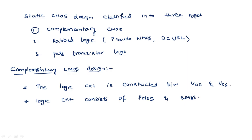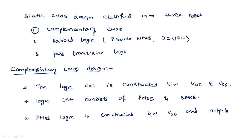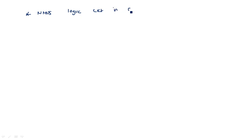The logic circuit consists of PMOS logic and NMOS logic, meaning the same function has to be implemented by both PMOS and NMOS logic circuits. PMOS logic is connected between VDD and the output, and NMOS logic circuit is connected between the output and ground.